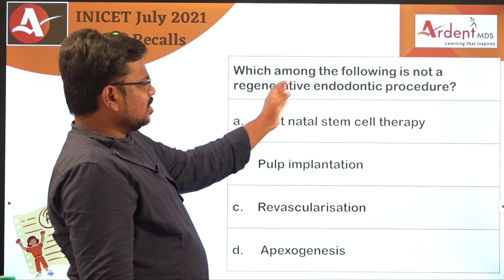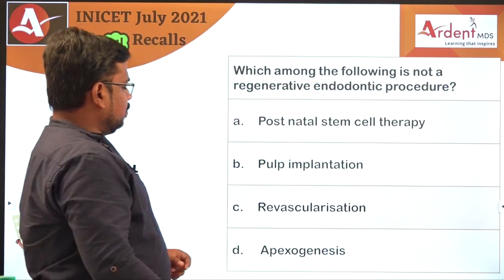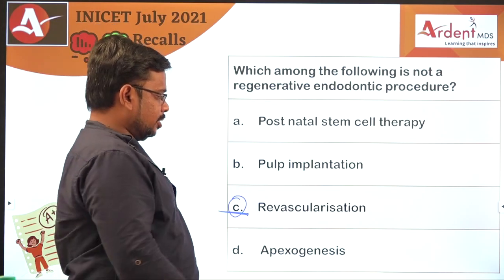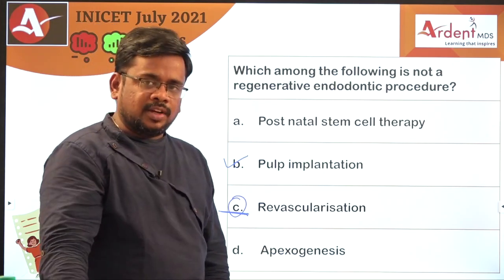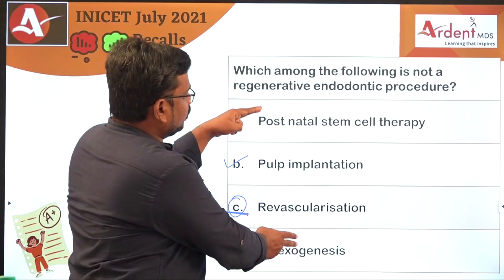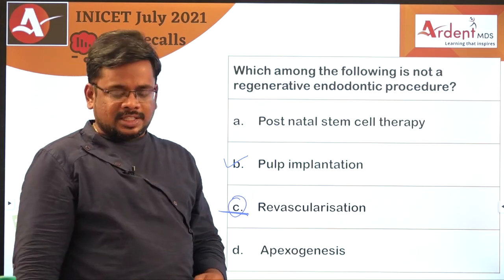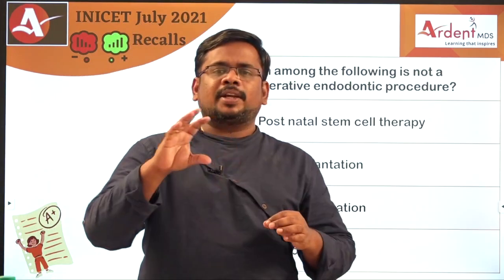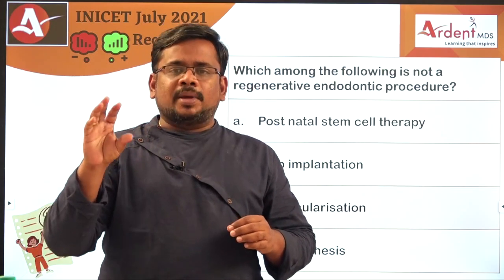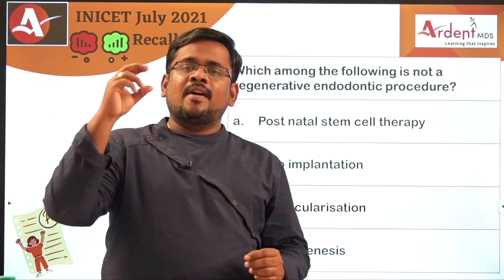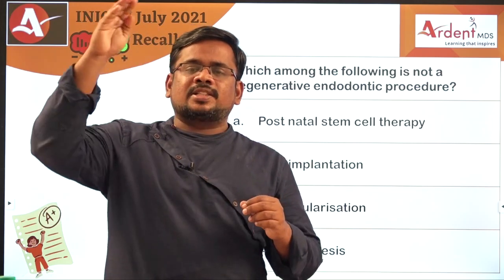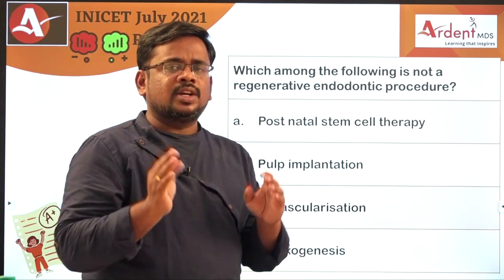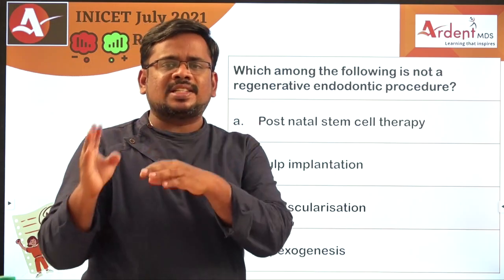So what is the answer? Which among the following is not a regenerative endodontic procedure? Many students know revascularization is a regenerative endodontic procedure, so you cannot skip that option. Pulp implantation is also a type of regenerative endodontics. To answer this, you have to know what regeneration means — replacing a deceased or damaged structure. In apexogenesis, some vital pulp is already present which causes remaining root formation. Regeneration applies to non-vital tissue, converting non-vital to vital state.